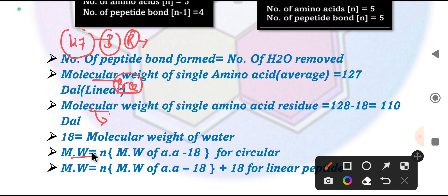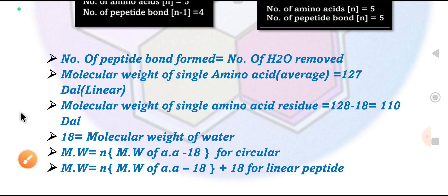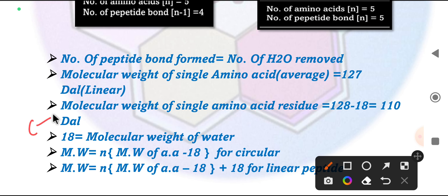In the circularized form, the number of water molecules removed equals the number of amino acids N, since peptide bonds equal N. For molecular weight calculation, we multiply the number of amino acids by the molecular weight of one amino acid (given in the question — default 117 daltons), then subtract 18N for circular or 18(N-1) for linear. In the linear case, one fewer water molecule is removed because N and C termini remain free, so we effectively add back one molecule of water.